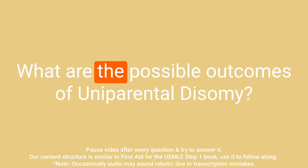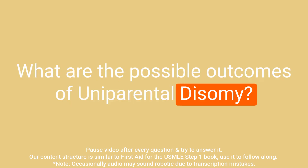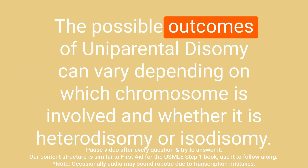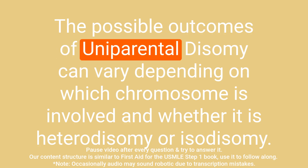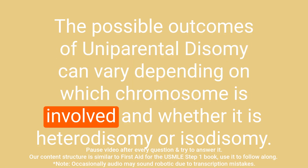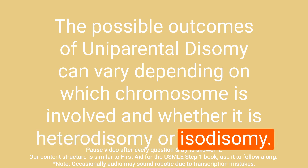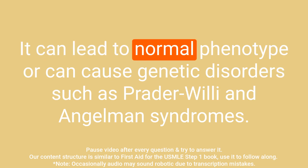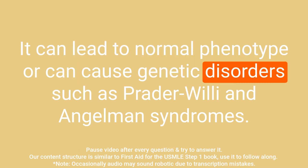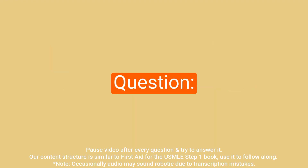Question: What are the possible outcomes of uniparental disomy? Answer: The possible outcomes can vary depending on which chromosome is involved and whether it is heterodisomy or isodisomy. It can lead to a normal phenotype or can cause genetic disorders such as Prader-Willi and Angelman syndromes.